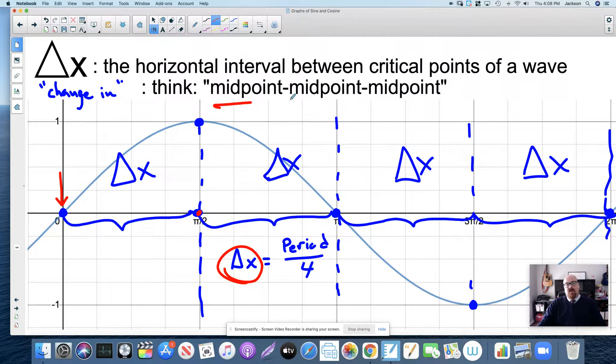When I say up here, think midpoint-midpoint-midpoint. If you know where the period starts and you know where the period stops, find the midpoint. So there's midpoint, then find the midpoint here, then find the midpoint here. Midpoint, midpoint, this midpoint here, and then this midpoint here. Then you'll know where the five critical points of any sine or cosine wave are.